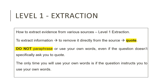The first skill taught in history is how to extract evidence from various sources. The question an examiner uses to examine this skill is called a Level 1 extraction question. When we extract information from a source, it means we remove that information directly as it is from the source. We are not supposed to make any changes to the wording — in other words, we are quoting the information. When answering a Level 1 extraction question, you are not supposed to paraphrase or write the information in your own words; you are supposed to quote the words exactly as they appear in the source.